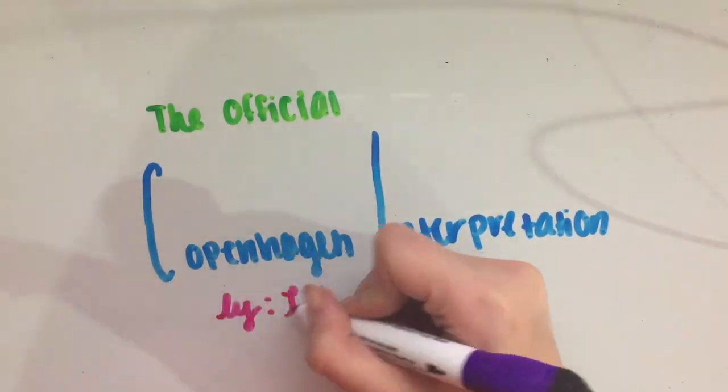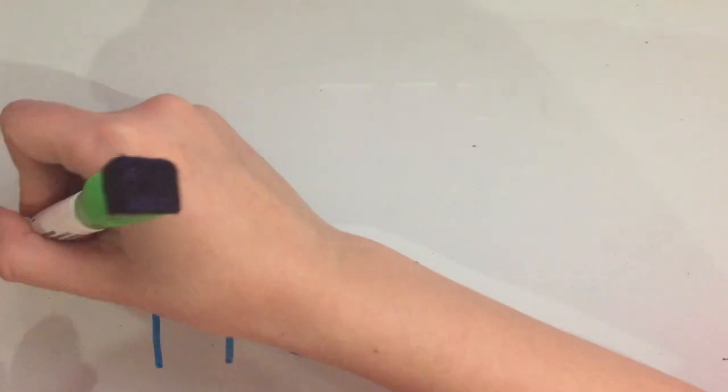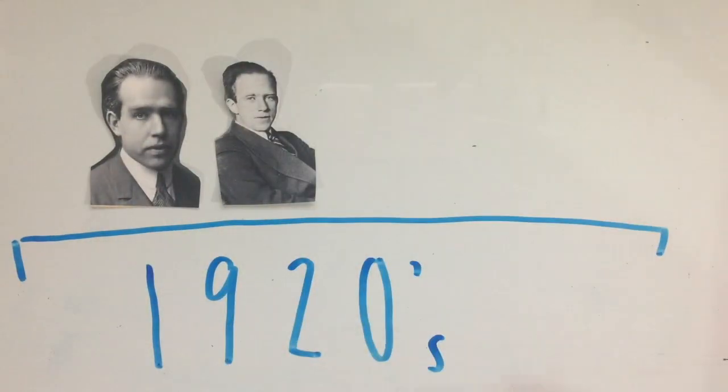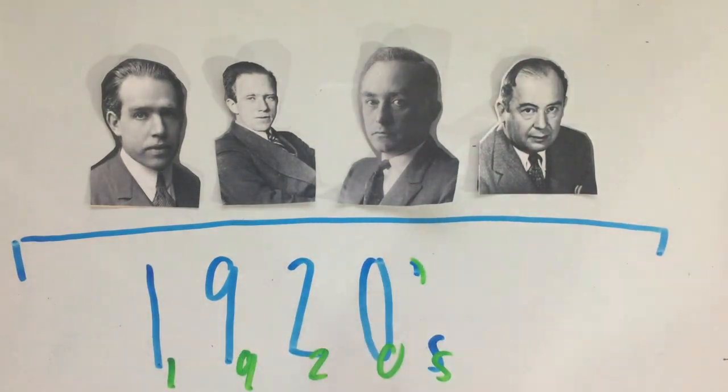Getting back on track, there is no one version of the Copenhagen Interpretation as it was formed over the 1920s by Niels Bohr, Werner Heisenberg, Max Born, and John von Neumann, as the small details change depending on who you ask.